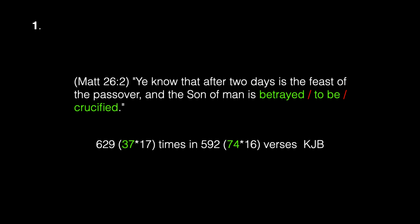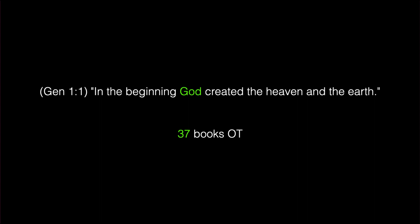Moving forward, we will not be duplicating any previous patterns; these will be 37 unique patterns. For example, the phrase 'to be crucified' occurs four times in the King James Bible. Let's examine an interesting 37 pattern that occurs in any Bible: Genesis 1:1 — 'In the beginning God created the heaven and the earth.' God is the first noun that occurs in the text and it occurs in exactly 37 books of the Old Testament.